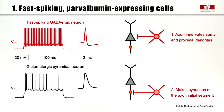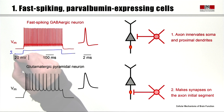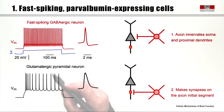We'll begin by talking about parvalbumin-expressing GABAergic neurons, which we've already discussed briefly in previous lectures when thinking about the action potential waveform. The parvalbumin-expressing cells have fast-spiking intrinsic electrophysiological properties. If you inject some depolarizing current into one of these cells in a brain slice, it'll depolarize and fire action potentials. If you inject a lot of current, it'll fire action potentials at a very high rate.